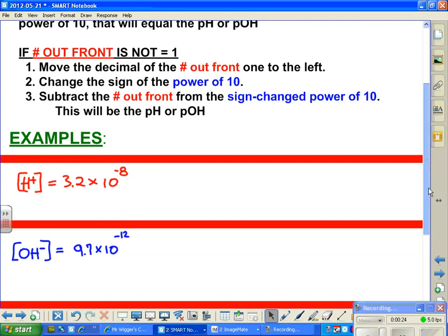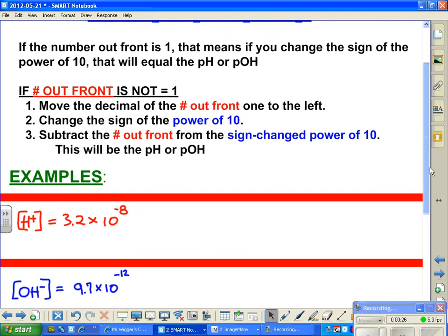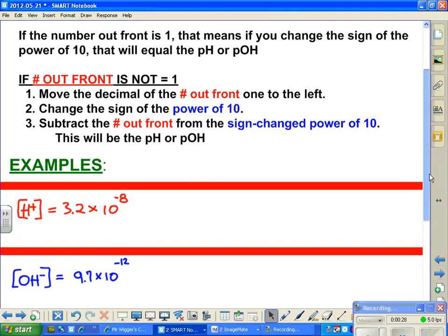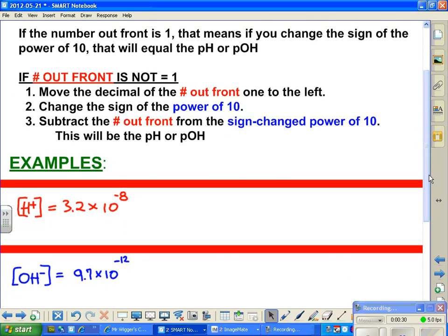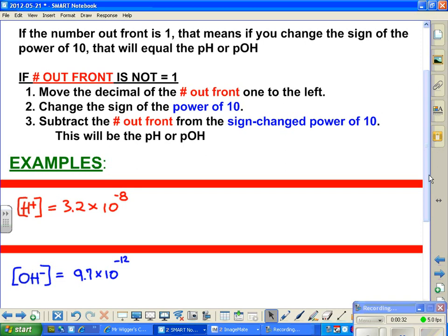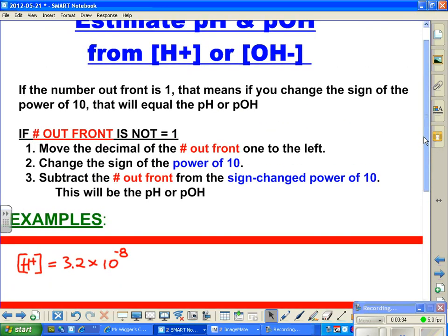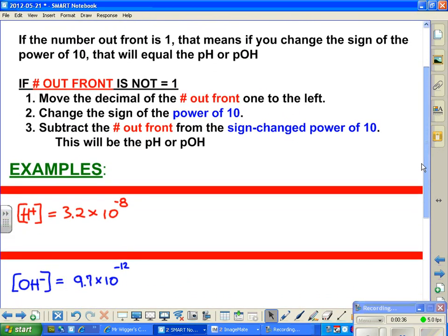We'll continue now. You have all the stuff up top, so you can look at that while I'm going through the examples with you. We'll start the first example by looking at the first set of instructions. If the number out front is 1, that means if you change the sign of the power of 10, that will be equal to the pH or pOH.